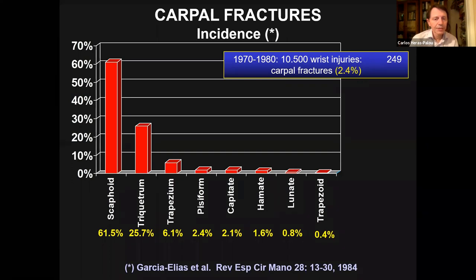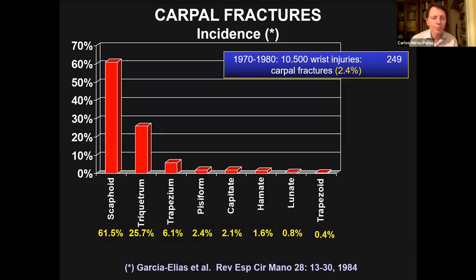Trapezium fractures are seen with decreasing frequency. Pisiform fractures are rare, as are capitate and hamate fractures, which are often part of a carpal-metacarpal joint fracture dislocation. Fractures of the lunate are quite rare, and fractures of the trapezoid are considered to be very rare — but I will question that today.